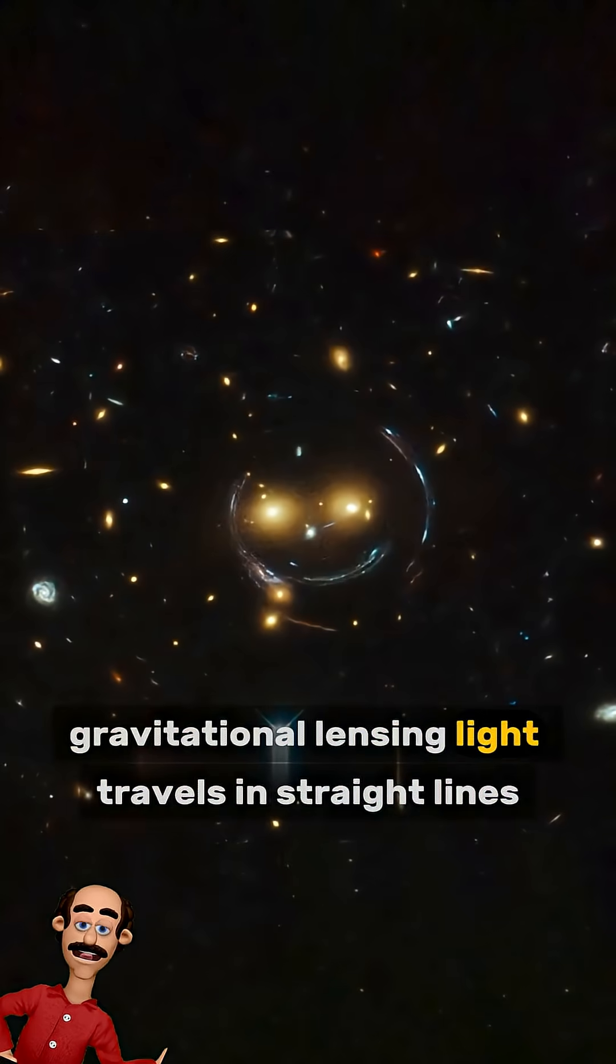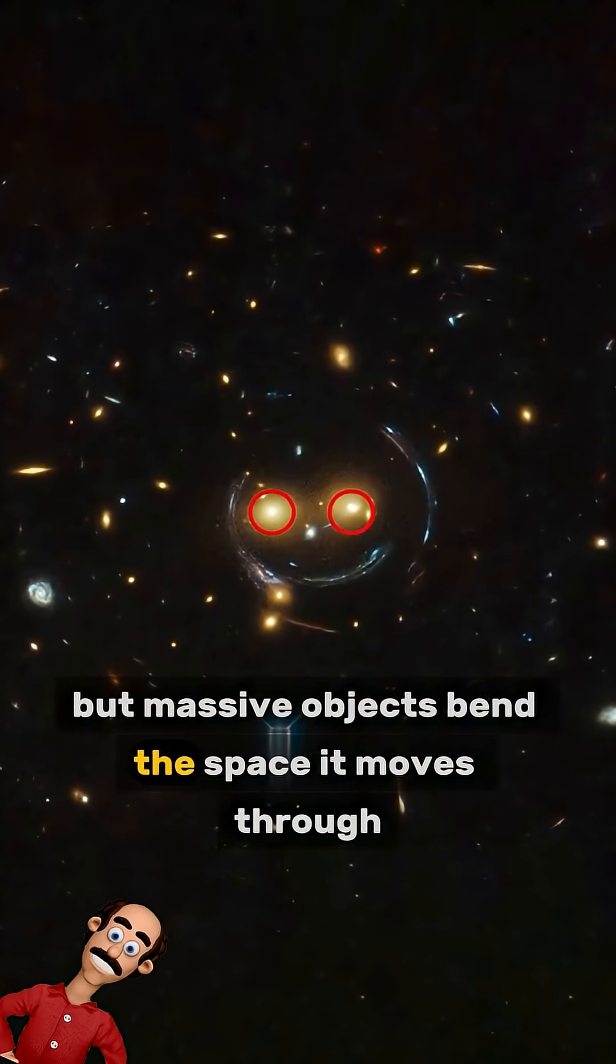Gravitational lensing: Light travels in straight lines, but massive objects bend the space it moves through.